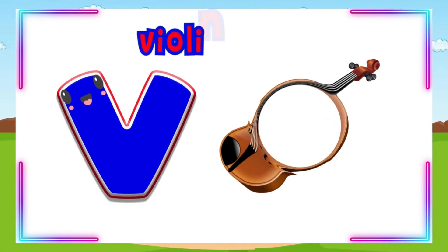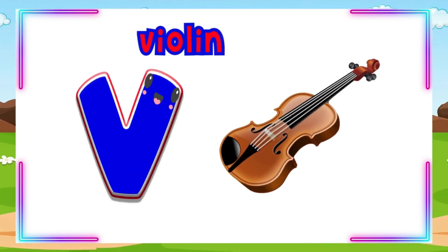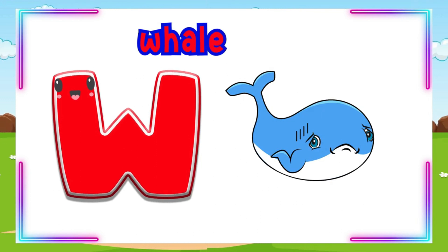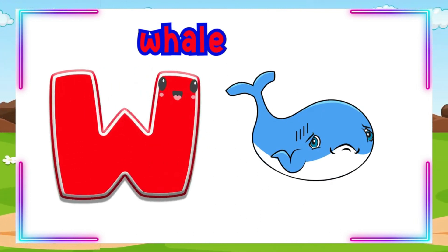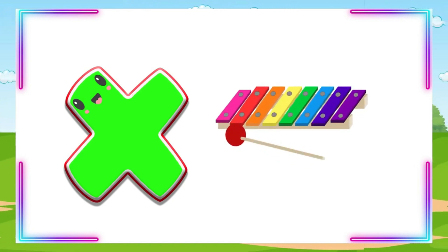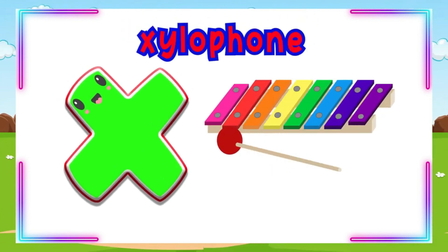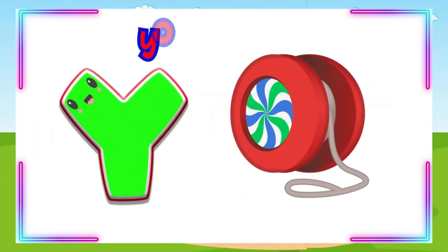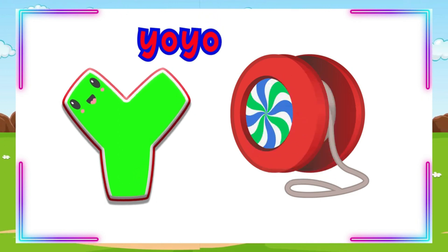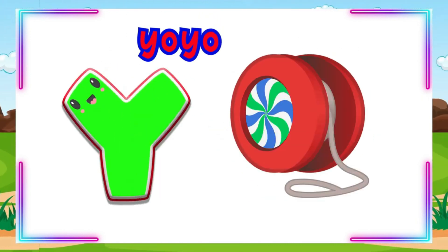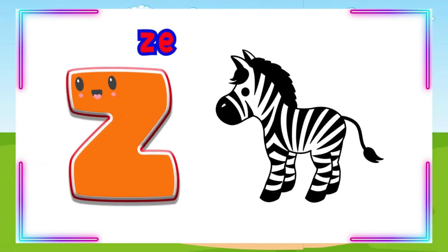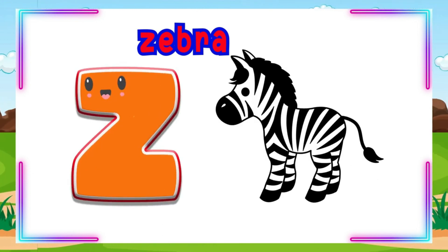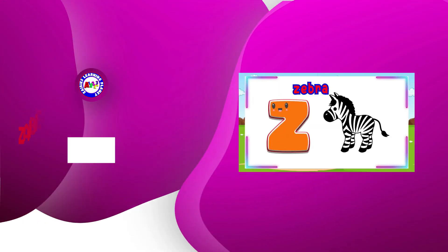V is for Violin. V-Violin, V-Violin, V-Violin. X is for Xylophone. Bye.